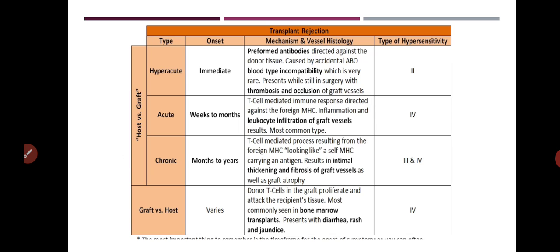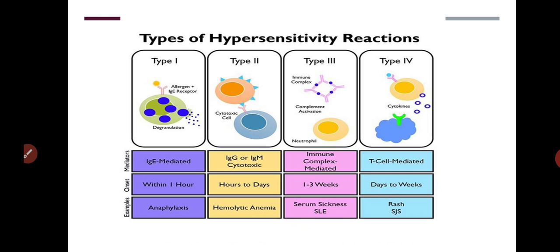There are about four types. One is host versus graft — which includes acute, hyperacute, and chronic. The other is graft versus host. Now, you may have an idea about hypersensitivity reactions from last year. Let's revise the basic concept. Hypersensitivity means a reaction — 'hyper' means very fast and rapid. Sometimes our body develops allergies or autoimmune diseases — those occur because of hypersensitivity reactions.